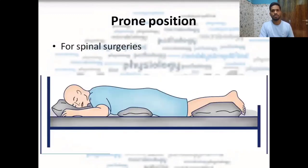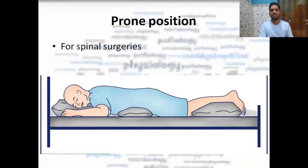Next we will talk about the prone position. It is totally opposite — the patient is lying on their chest and abdomen, which is facing towards the bed, and the spine is towards the surgeon. It is usually used for spinal surgeries because the surgeon gets better access to the spinal cord when making an incision from the back.